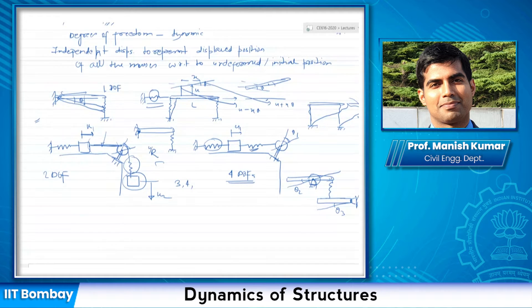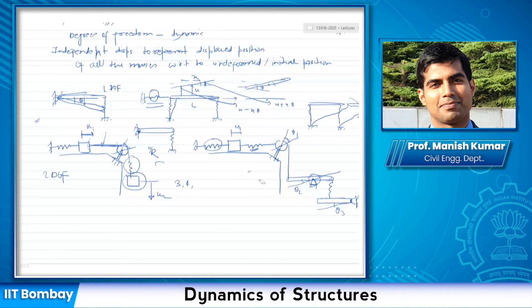What if I replace this spring with a string here? How many degrees of freedom would I then have? If I replace this spring by an inextensible string, I would have simply reduced one degree of freedom. Now my theta1 and theta2 are related.